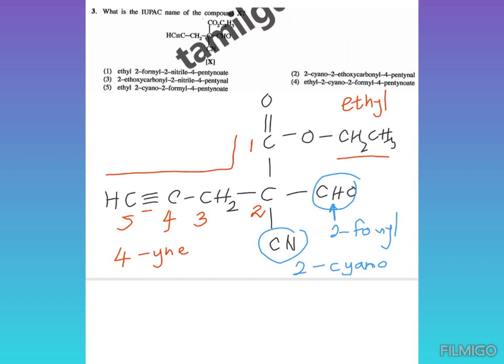We'll write the name of the compound. It is ethyl - keep a small space - then write the substituent groups: 2-cyano, put a small dash, 2-formyl. Then we write the root name of this compound. Five carbon atoms, so pent-4-ynoate.